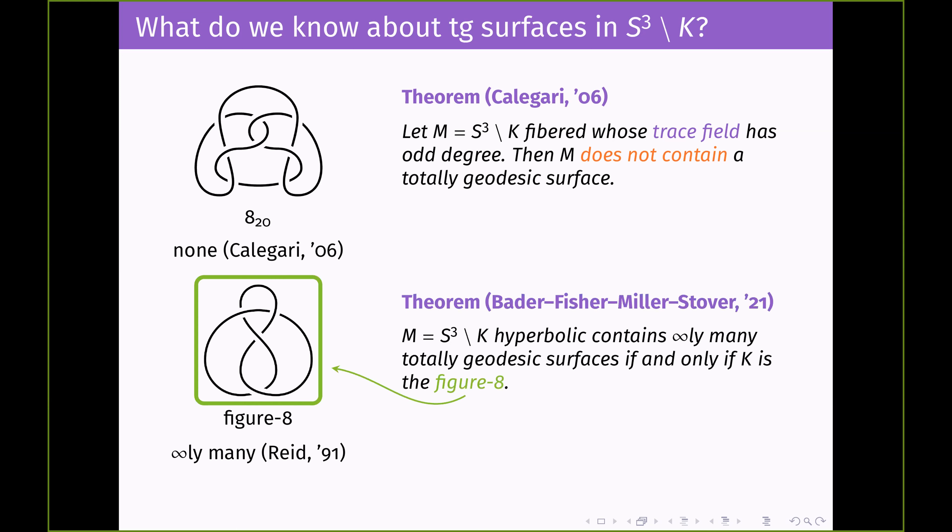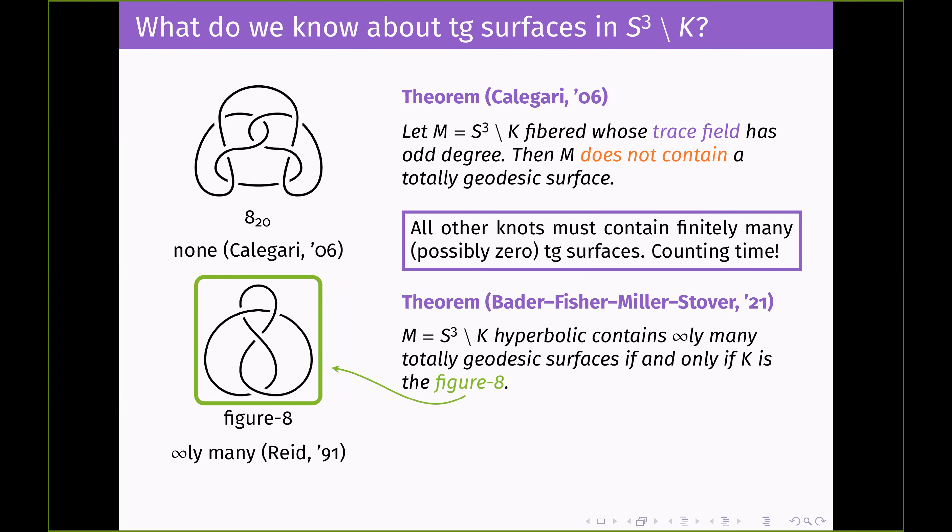On the flip side, Bader, Fisher, Miller, and Stover very recently showed that a hyperbolic knot complement contains infinitely many totally geodesic surfaces if and only if that knot is the figure-eight. It has to do with arithmeticity. What we really care about is that all the remaining knot complements contain finitely many totally geodesic surfaces, and that finite number might actually be zero. So let's try and count them.